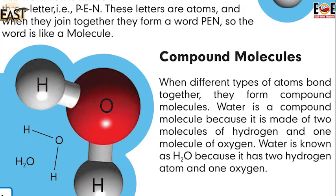When different types of atoms bond together, they form compound molecules. Water is a compound molecule because it is made of two molecules of hydrogen — repeat with me: hydrogen, hydrogen — and one molecule of oxygen — repeat: oxygen, oxygen. Water is known as H2O because it has two hydrogen atoms and one oxygen atom.